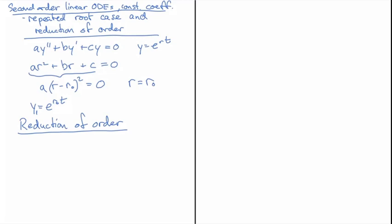Let's just accept, because it works, that y₂ if we assume it's some v(t) multiplied by the original one, y₁(t).